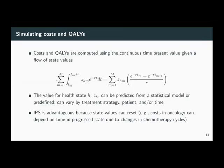We can also simulate costs and utilities from this disease output using the continuous time present value. The main thing to take away is that we can compute this with a closed form expression — there's no integral we have to compute numerically, which makes it quite fast. The key is the Z term — those are the state values for each health state H. Like the disease model, they can be predicted from a statistical model or predefined, and they can vary by treatment strategy, by patients, or even for different time intervals.